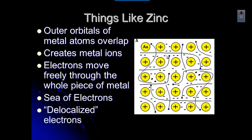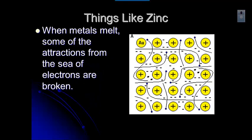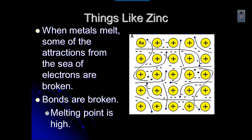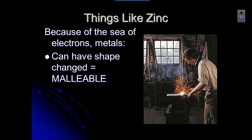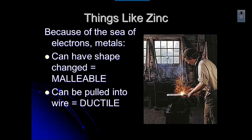When you think of something being local, you think of it as being close to home. Delocalized means those electrons leave their home atom and move around between the other ions. When metal melts, some of those attractions are broken — those metallic bonds break — so melting points are really high. Breaking bonds causes high melting points. And because of that sea of electrons, metals can have their shapes changed — we say they are malleable because that sea of electrons allows those ions to move around.